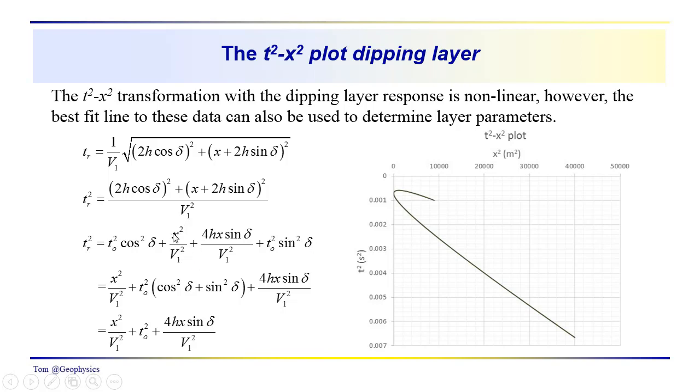We have the relationship that we'd expect to see between T squared and X squared. This combination of cosine squared delta plus sine squared delta is equal to 1. So this simplifies, and we get this relationship: X squared over V1 squared plus T0 squared plus 4Hx sine of delta. So we have this additional term here.